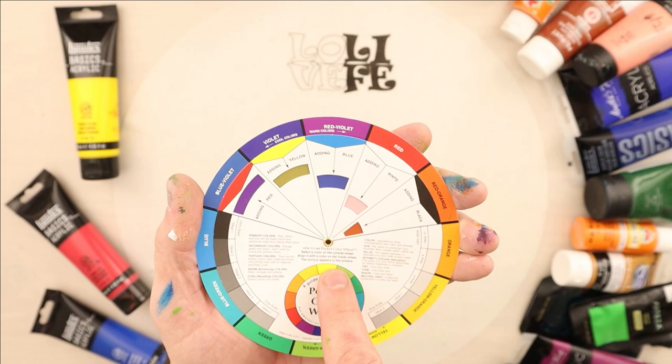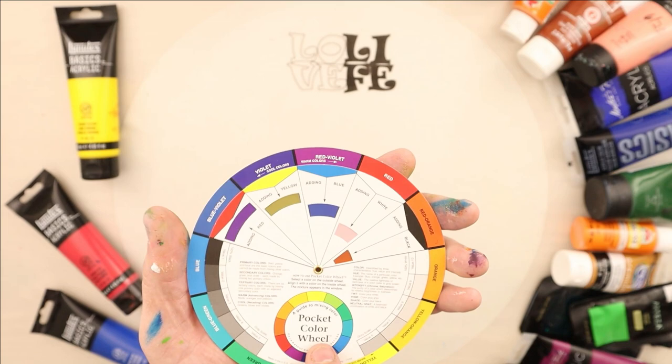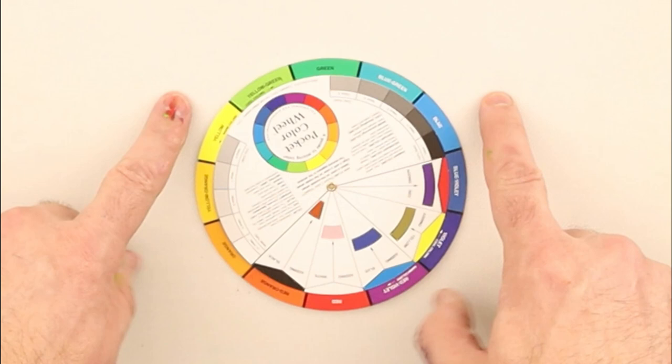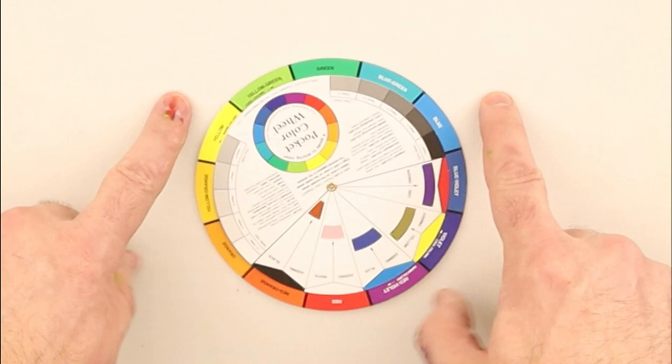It's going to be gray. It's going to be brown. Depending on how much you put together, it's going to be black. You're going to get mud. So really quickly, everyone's probably seen this before. I'm just going to go over it really quickly. Blue, yellow, red are our primary colors.